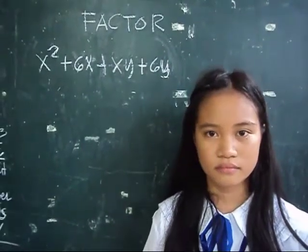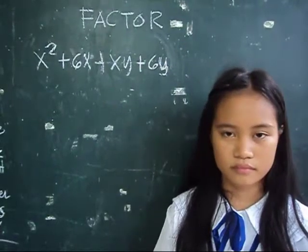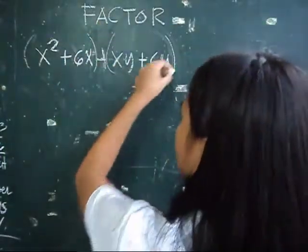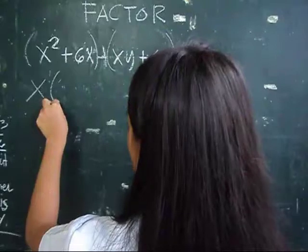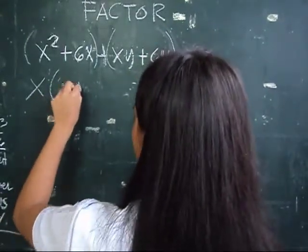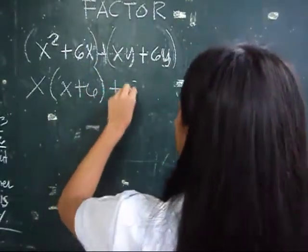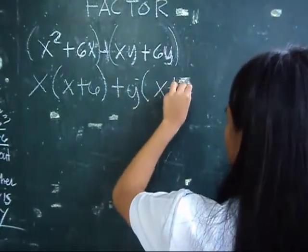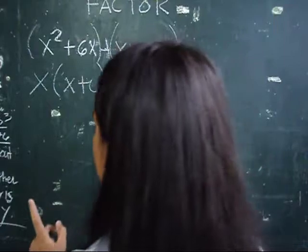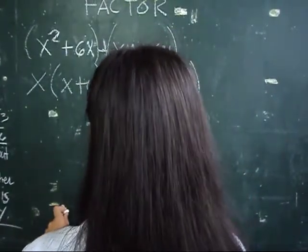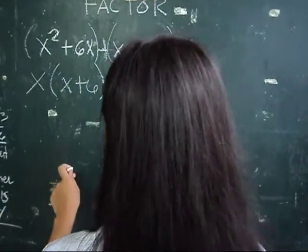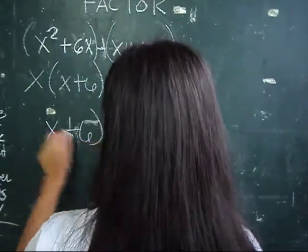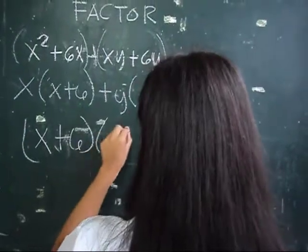Factor x squared plus 6x plus xy plus 6y. Factor this by grouping. Factor out x from the first two terms. The other factor is x plus y. And the other factor is x plus 6. Since x plus 6 is common, factor out x plus 6. The other factor is x plus y.